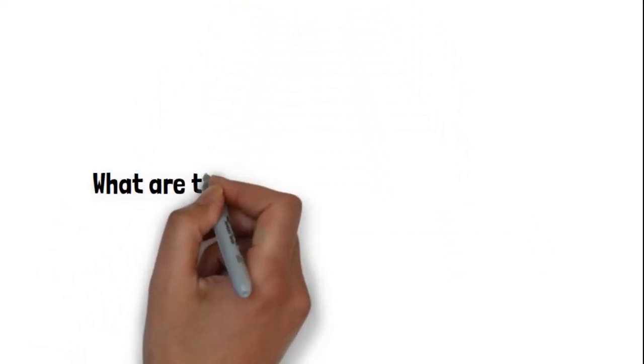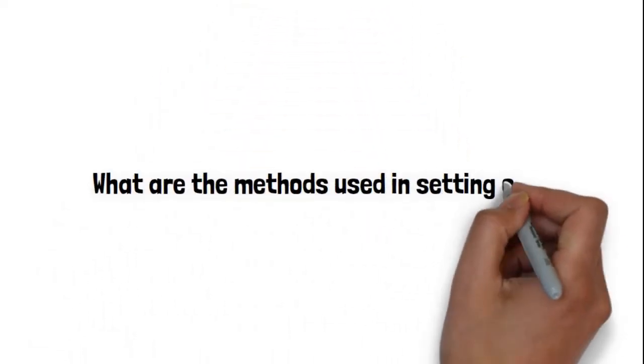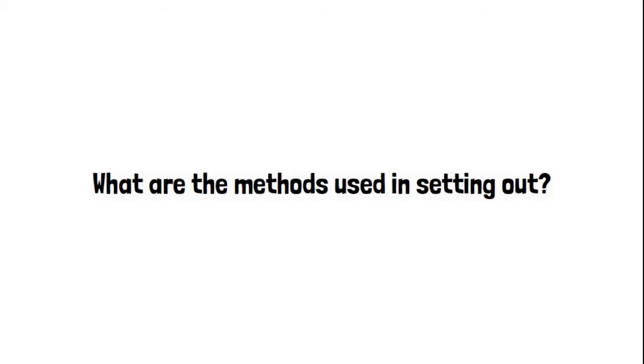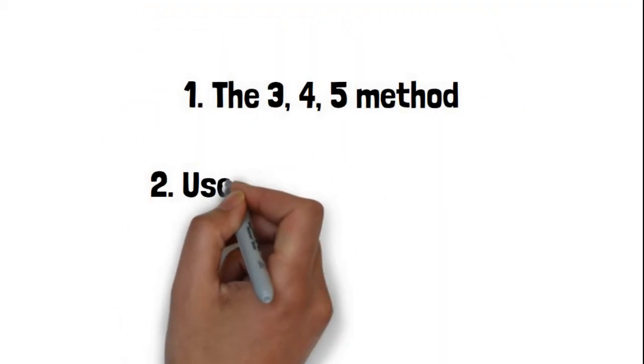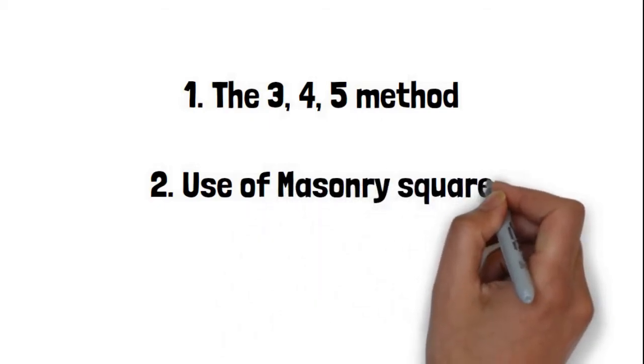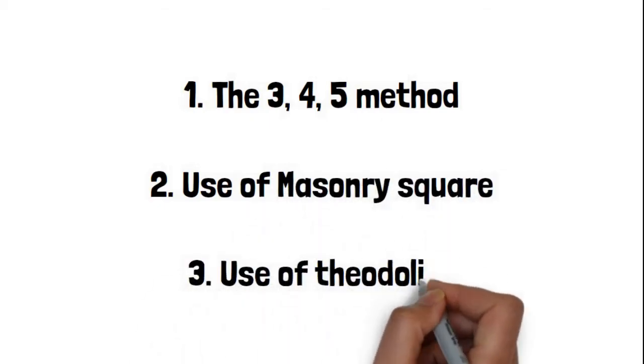What are the methods used in setting out? Methods used in setting out may include but not limited to the 3-4-5 method, use of masonry square, and use of theodolite.